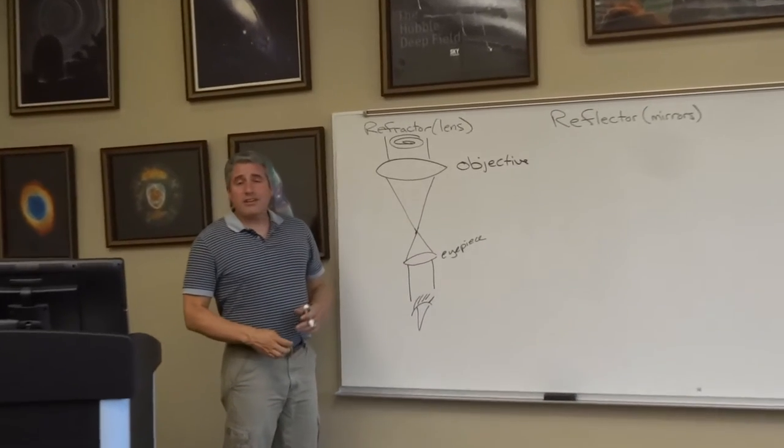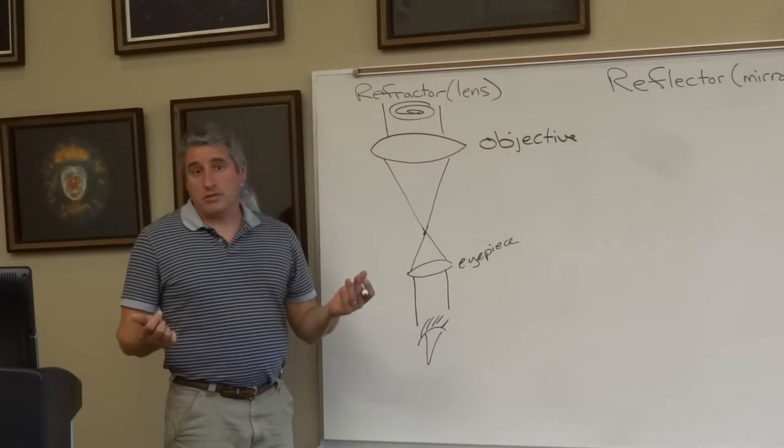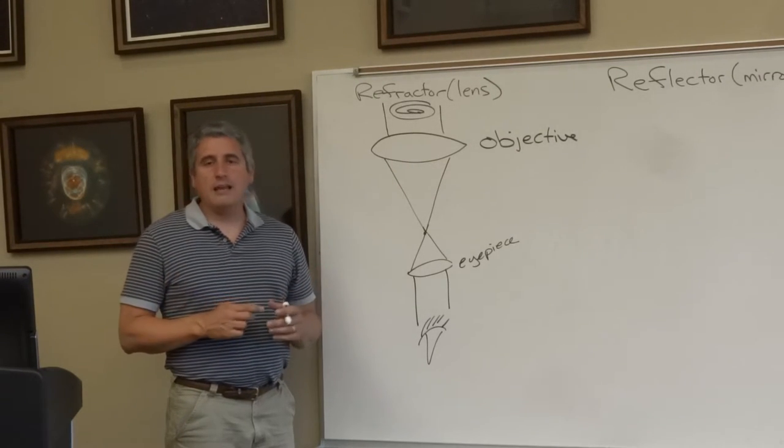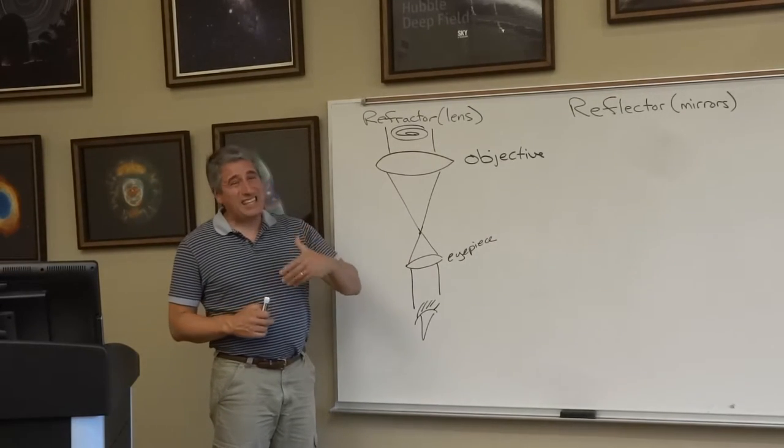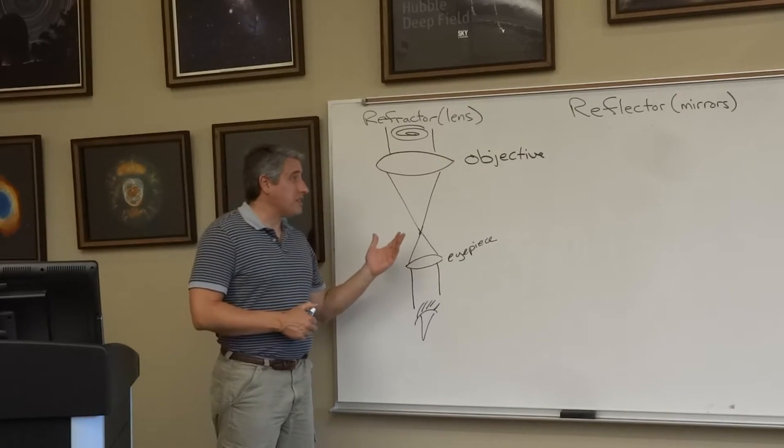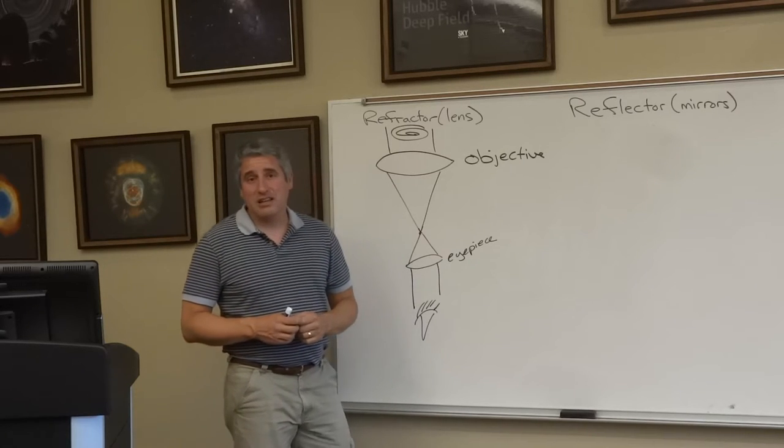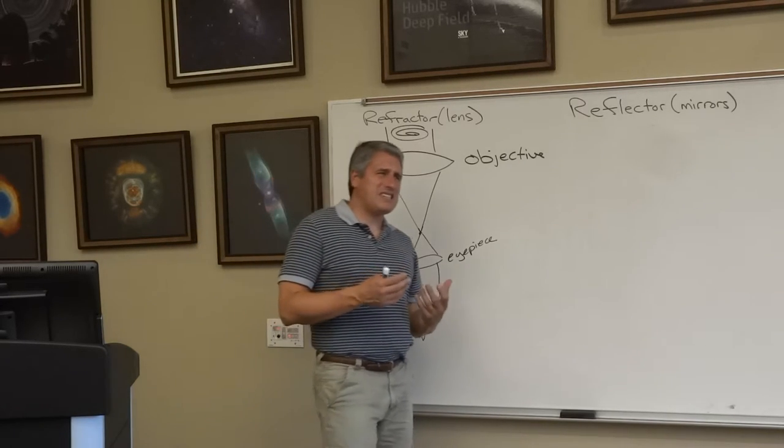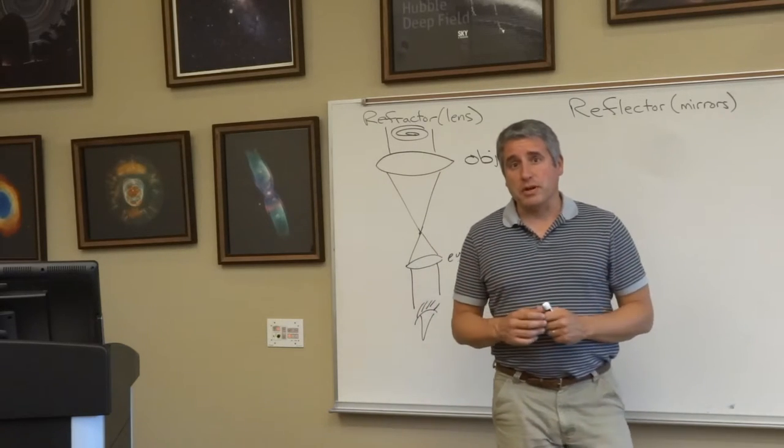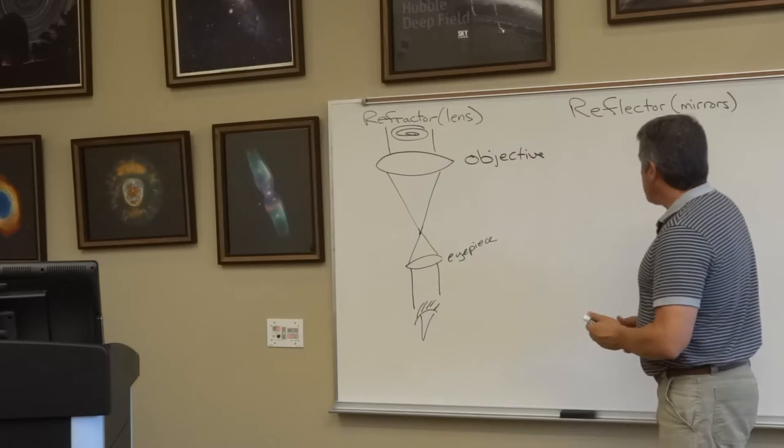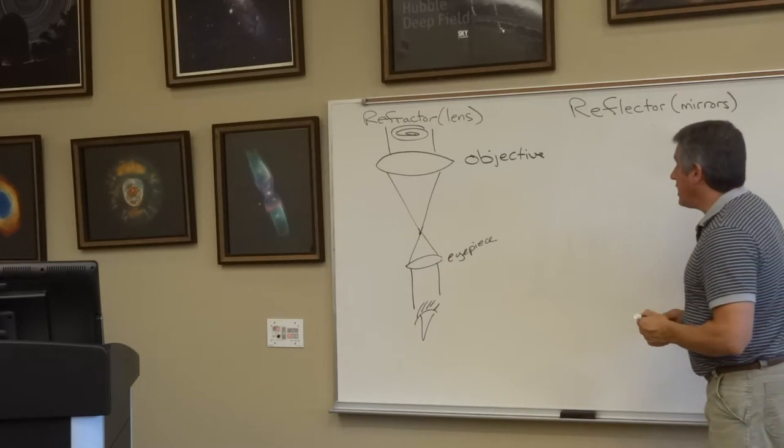Now, Galileo didn't have access to good mirrors. If he had, he might have used designs that were perfected in the next century. Galileo was building his telescope around 1610. It wasn't until the late 16, early 1700s when better mirrors were built and they were able to build telescopes that work for a mirrored variety.